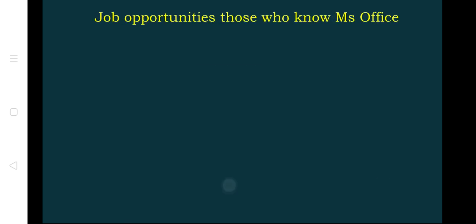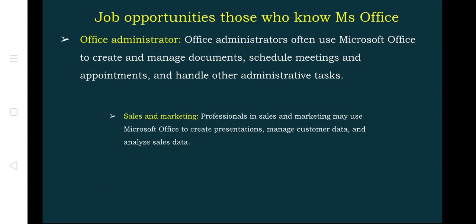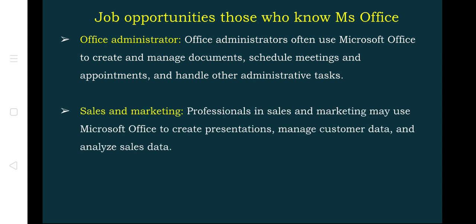So what type of job can a person get when they learn MS Office? The first is Office Administrator. Office administrators often use Microsoft Office to create and manage documents, schedule meetings and appointments, and handle other administrative tasks. In order to make good administration in an office environment, MS Office helps a lot. They can create neat documents, schedule meetings and book appointments — all organized in an efficient manner using MS Word.